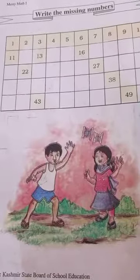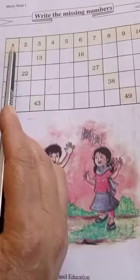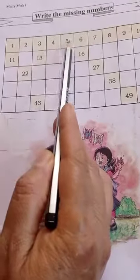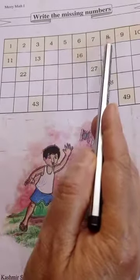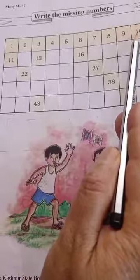This is the number 1, 2, 3, 4, 5, 6, 7, 8, 9, 10. This is completed.